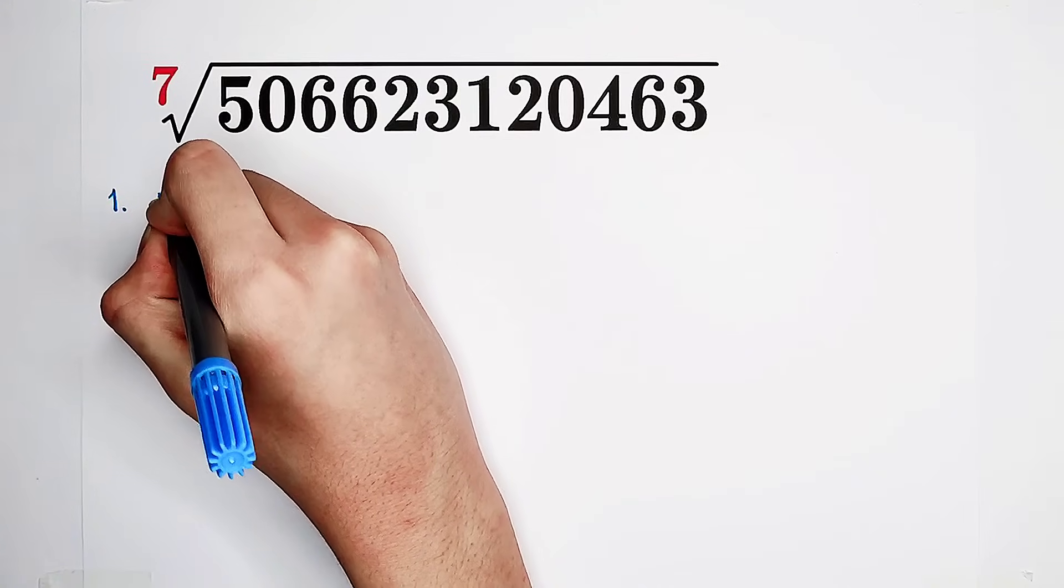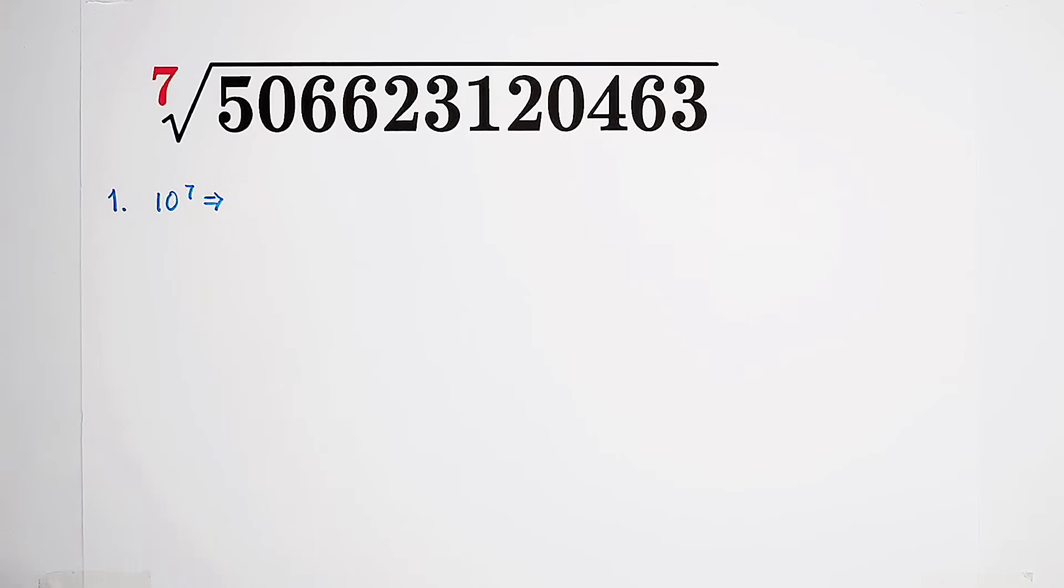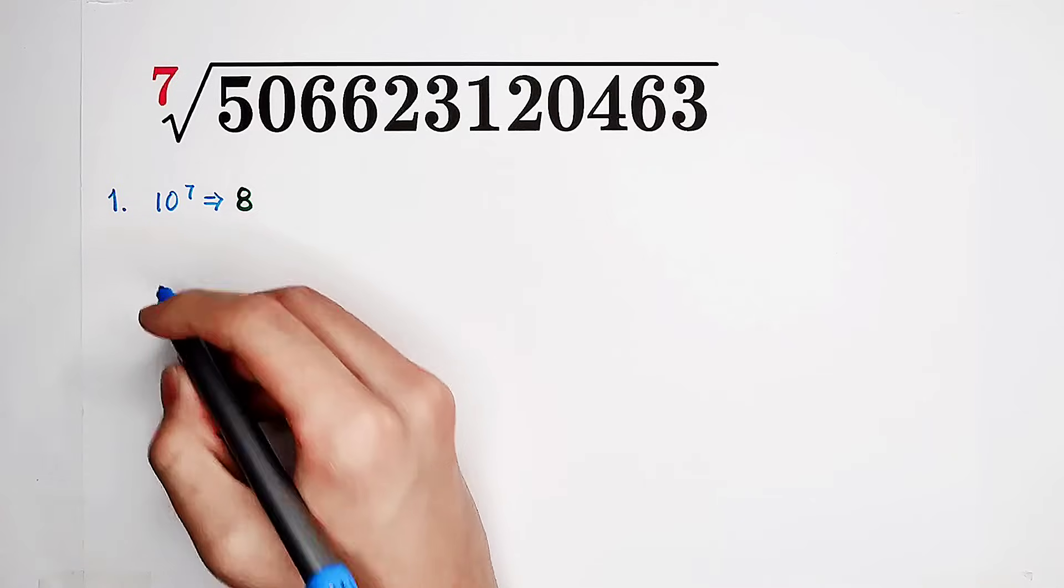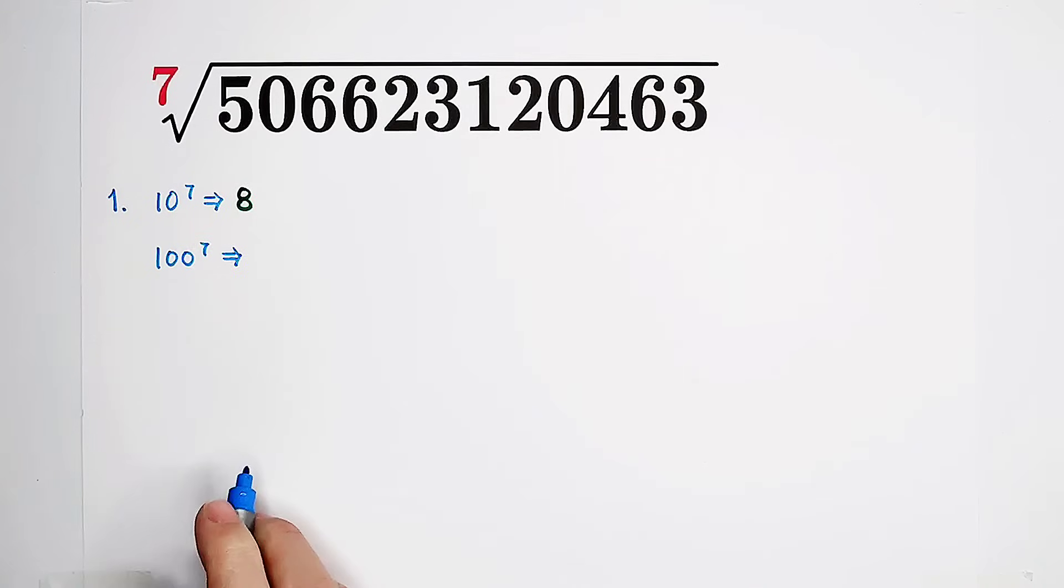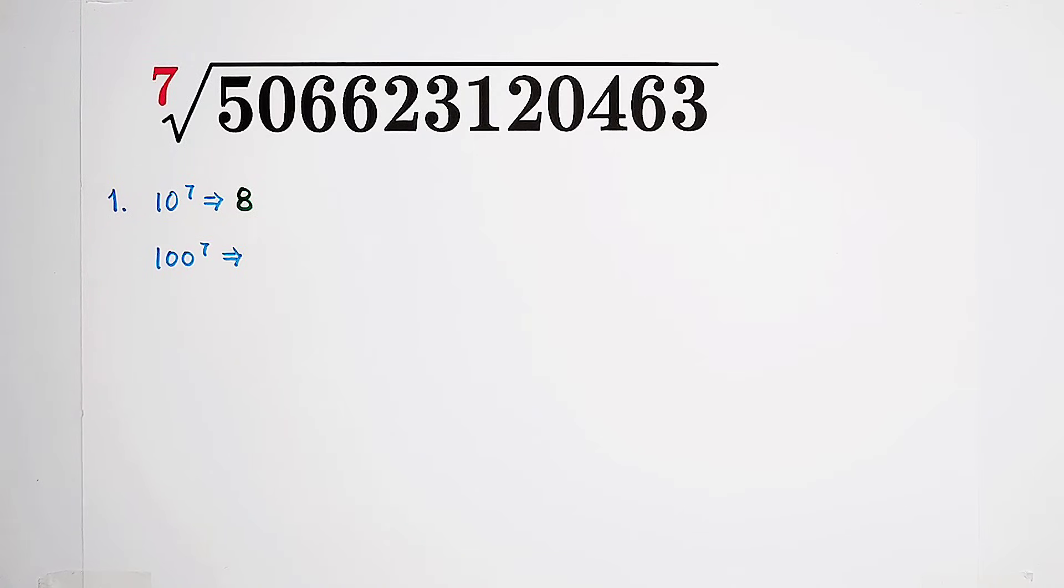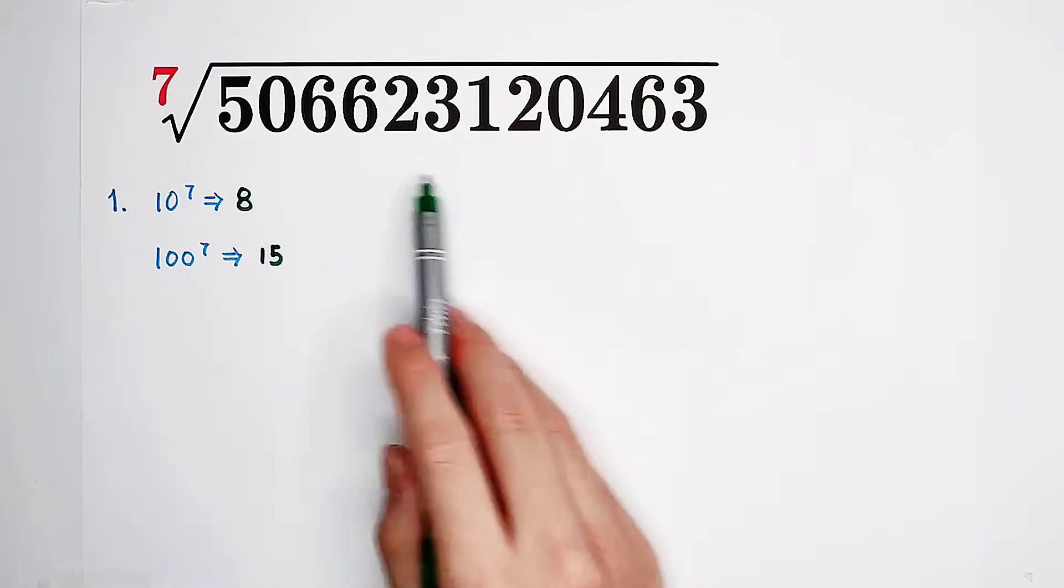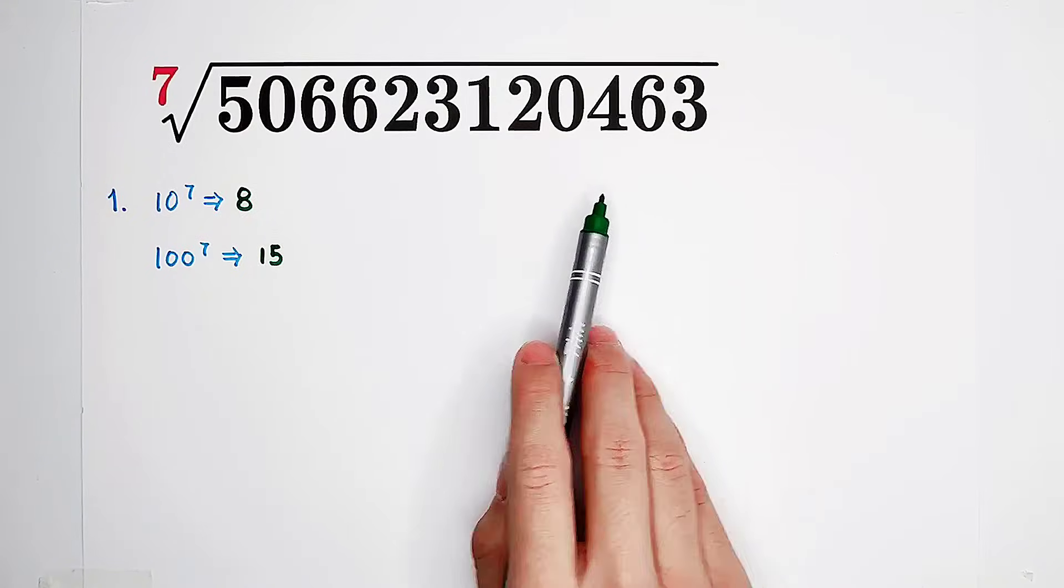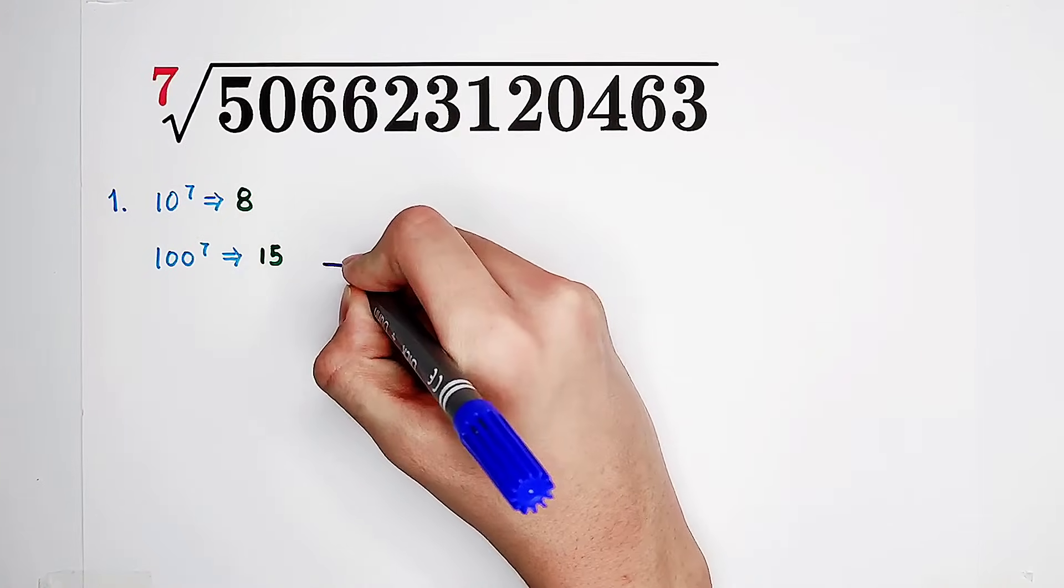And because we know that 10 to the power of 7 has how many digits? 8. One and 7 zeros. What about 100 to the power of 7? Even more, 1 and 7 times 2 zeros. So it is 1 plus 14, so it consists of 15 digits. All of this number under the root has 12 digits, and 12 is between 8 and 15. So that means our result has to be a two-digit number.